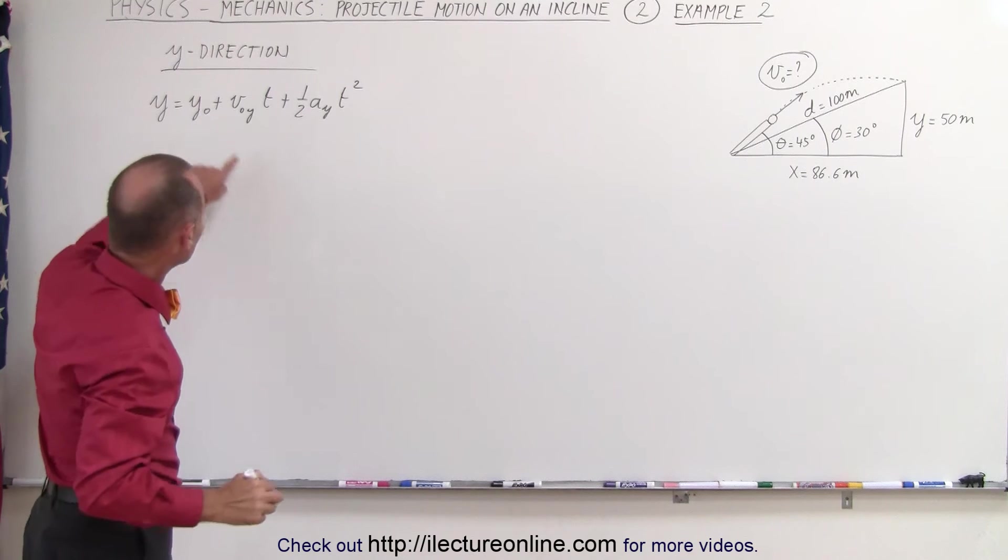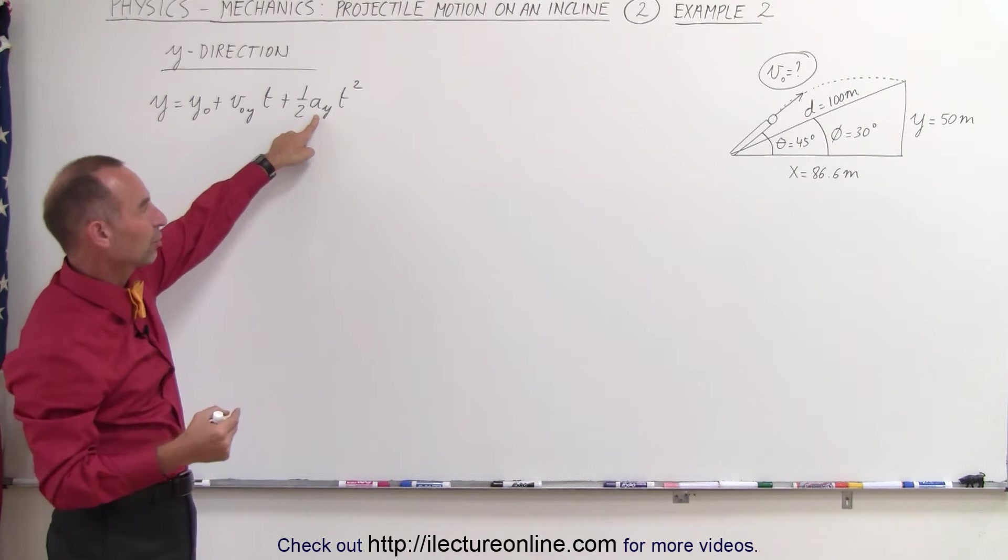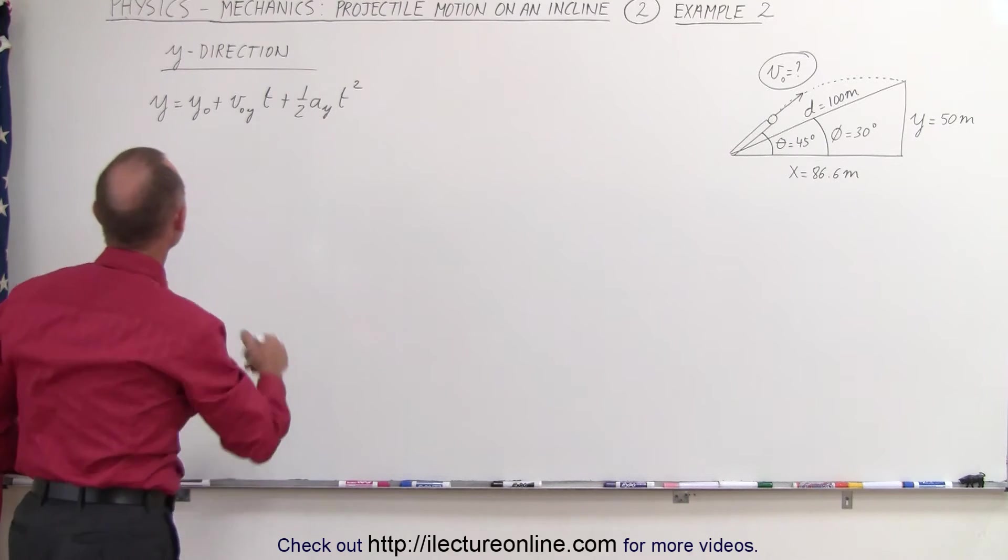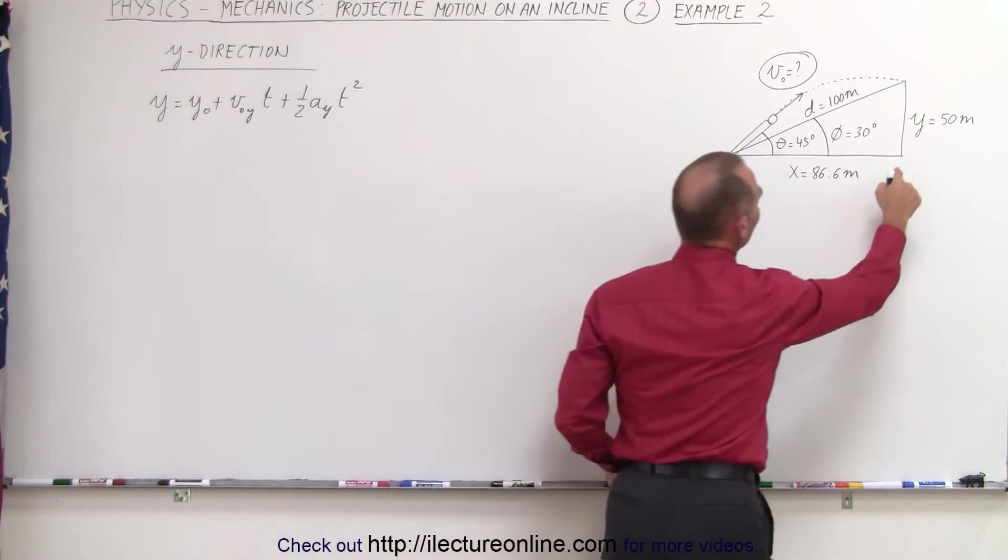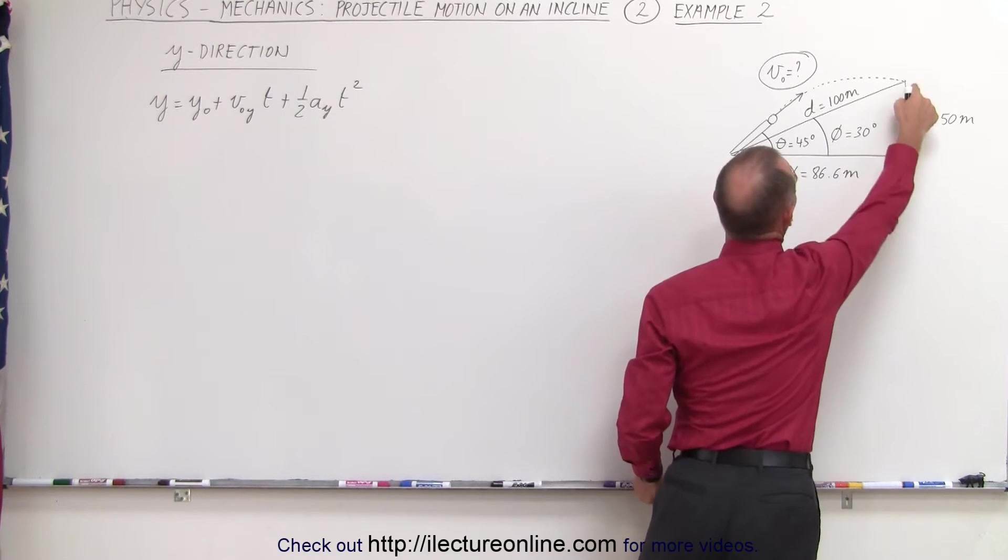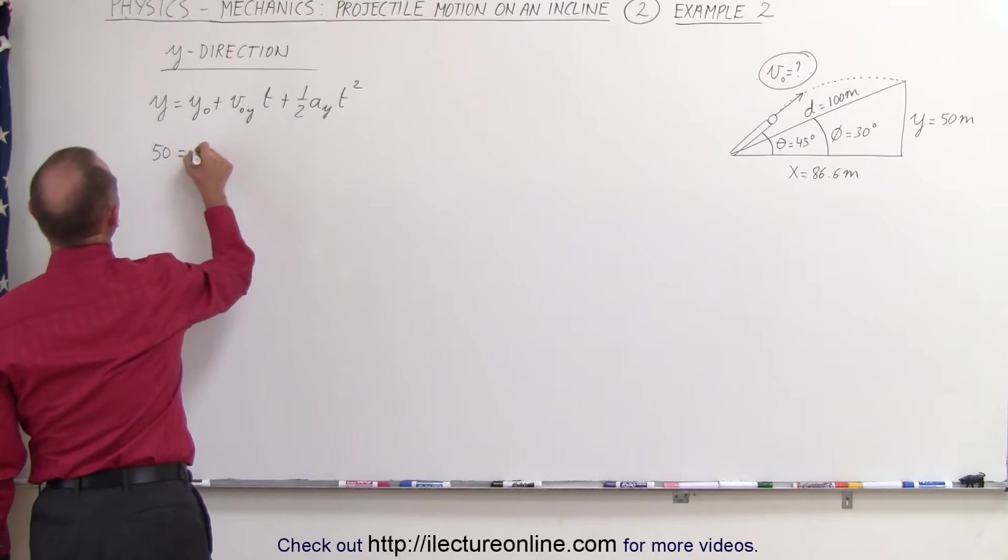We can assume that the initial height is zero, and the acceleration in the y direction will be the acceleration due to gravity. We know that y will be 50 meters.